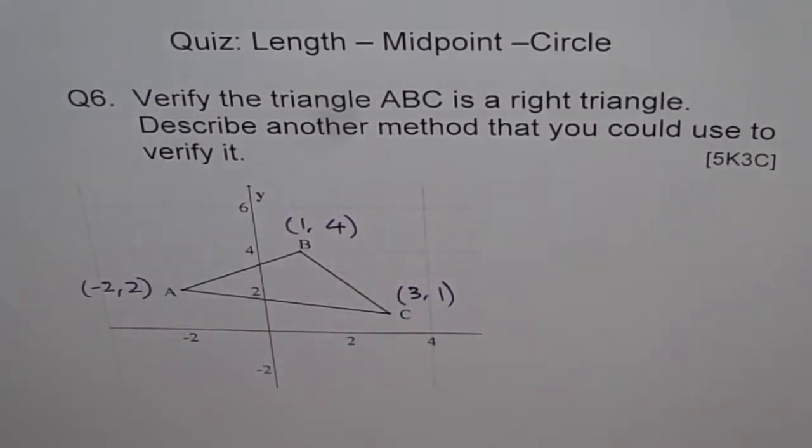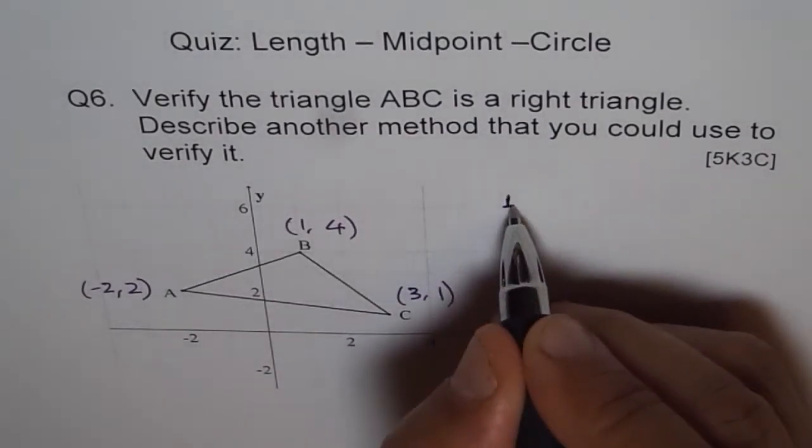So we know the points. Now, it seems that we have right angle at B. So what we can do is we can follow two methods. One,